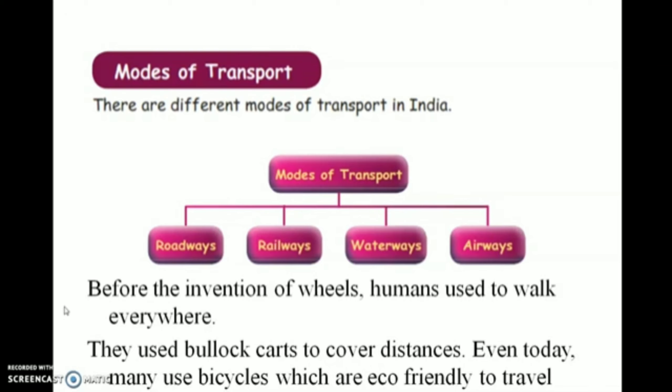Before the invention of wheels, humans used to walk everywhere. They used bullock carts to cover distances. Even today, many of them use bicycles, which are eco-friendly, to travel.